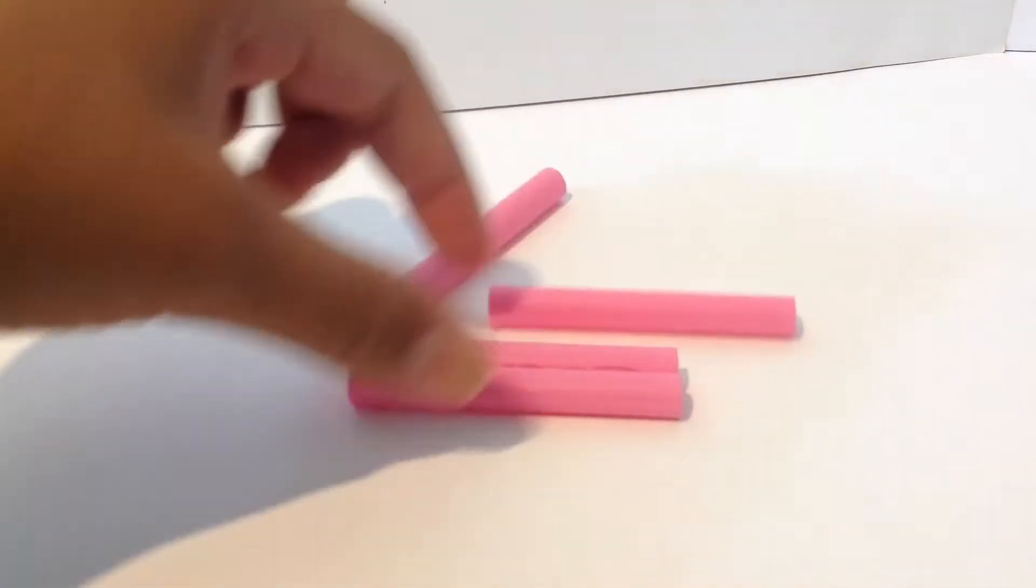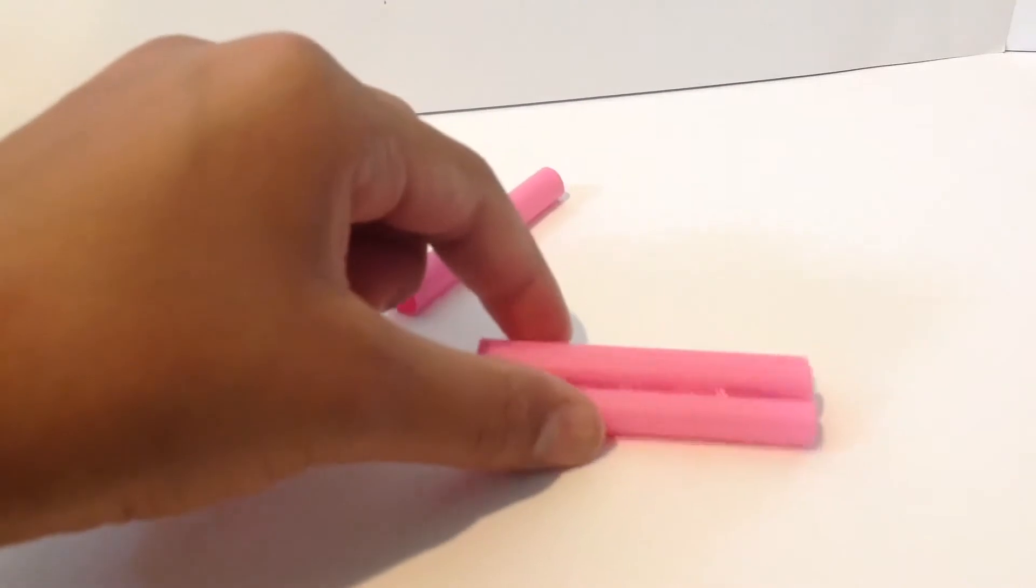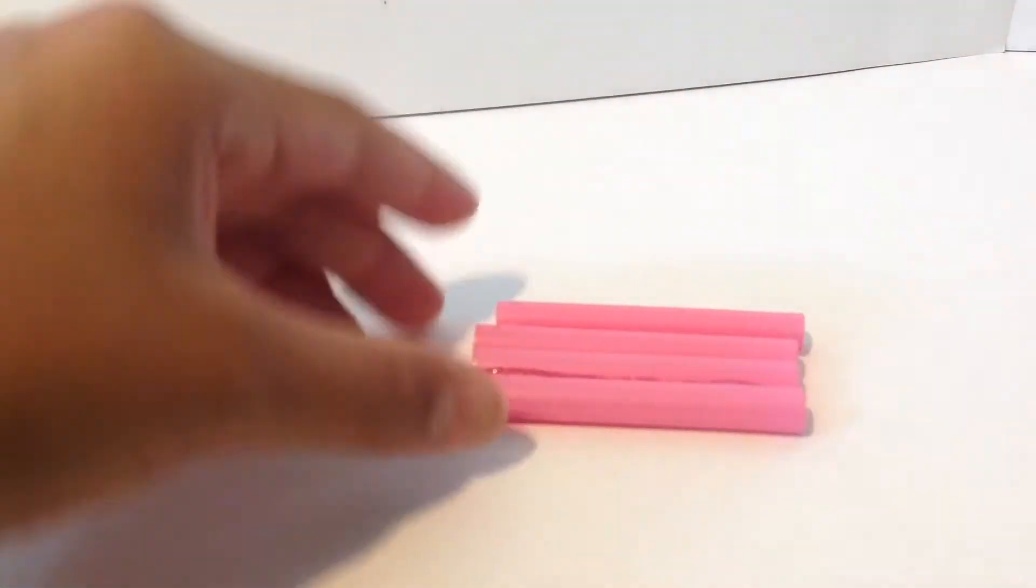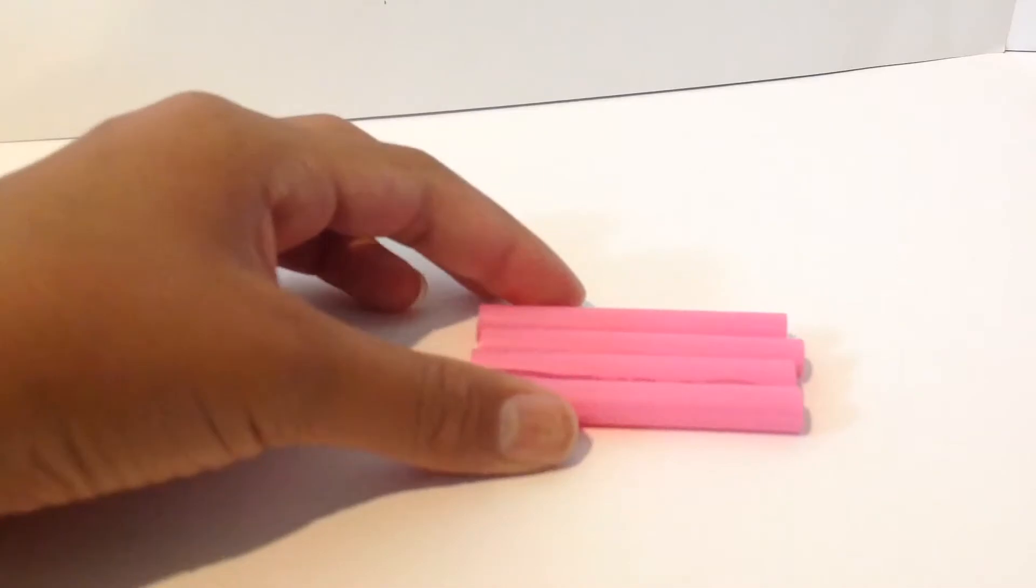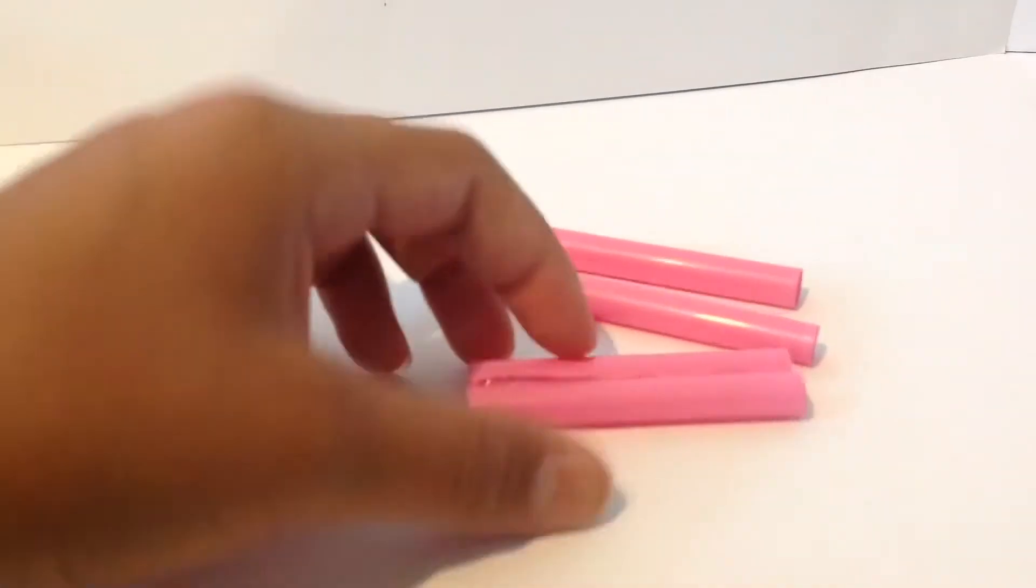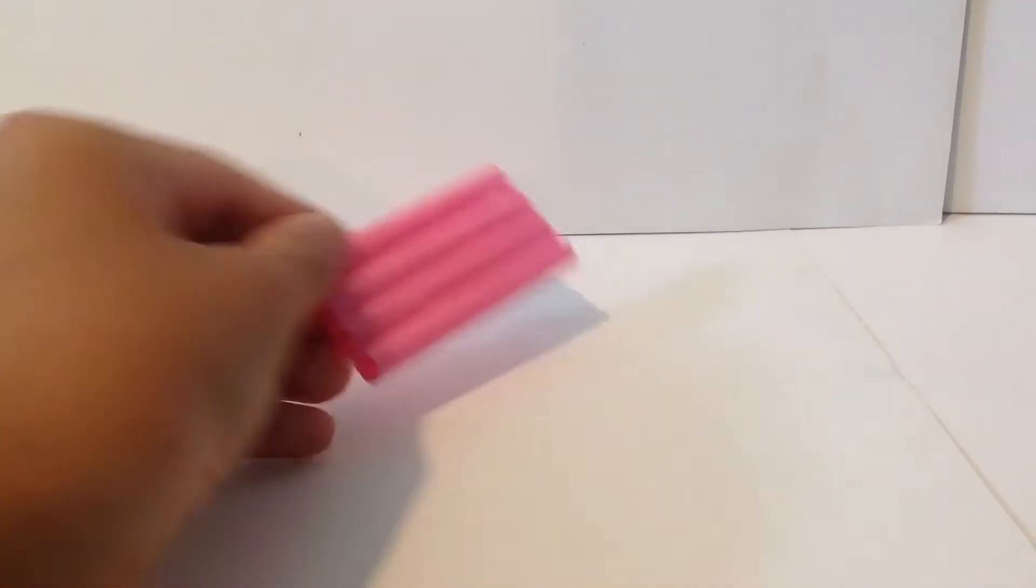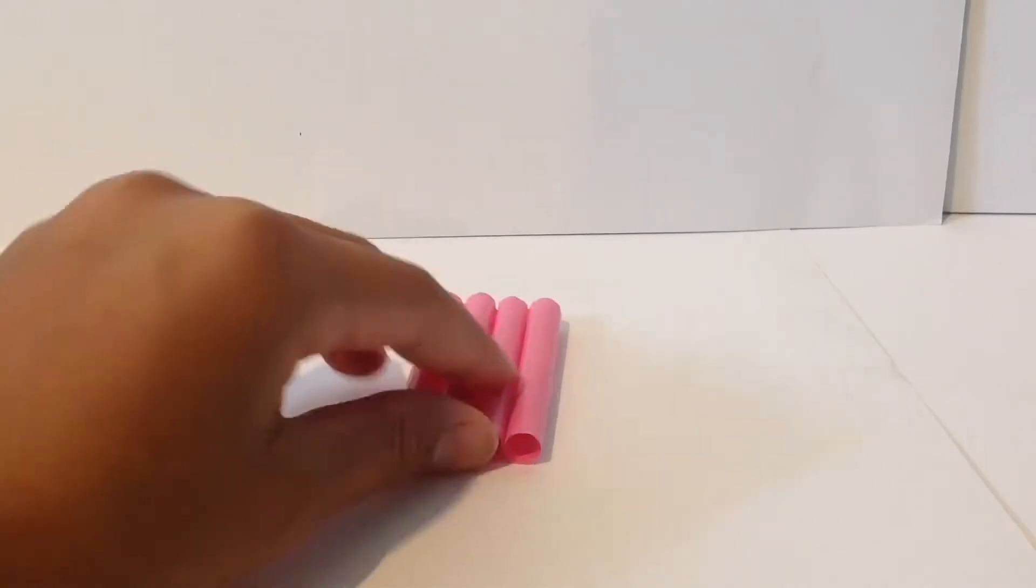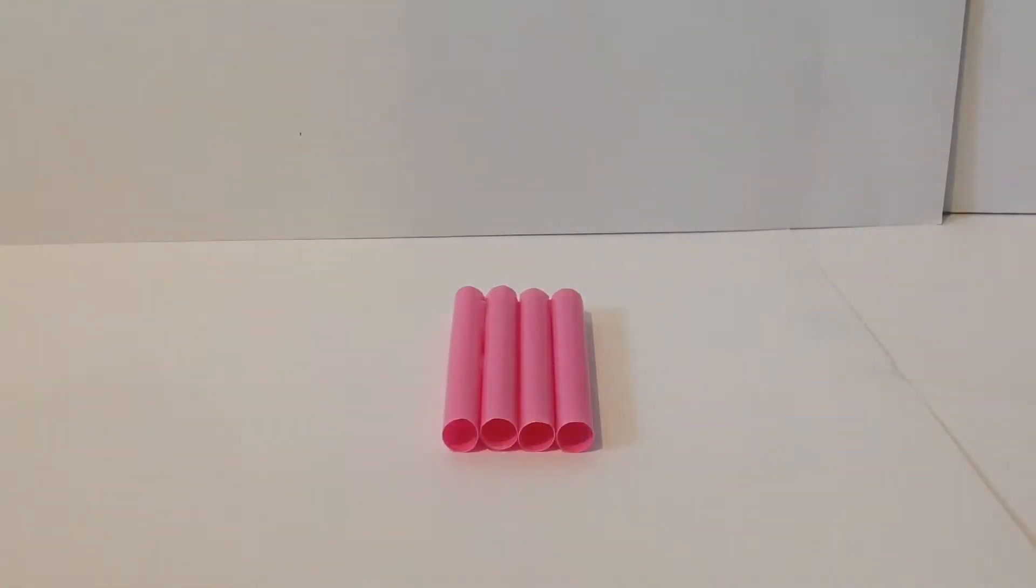Then you can just glue all that together. This is what it should look like when it's all glued on, and then we're going to work on the legs.